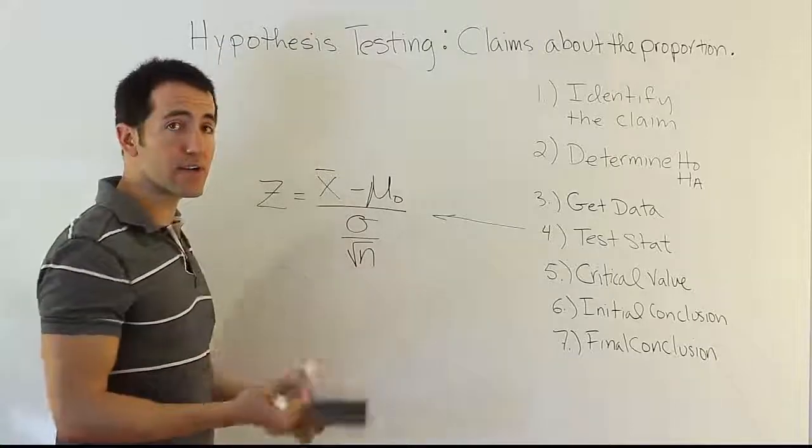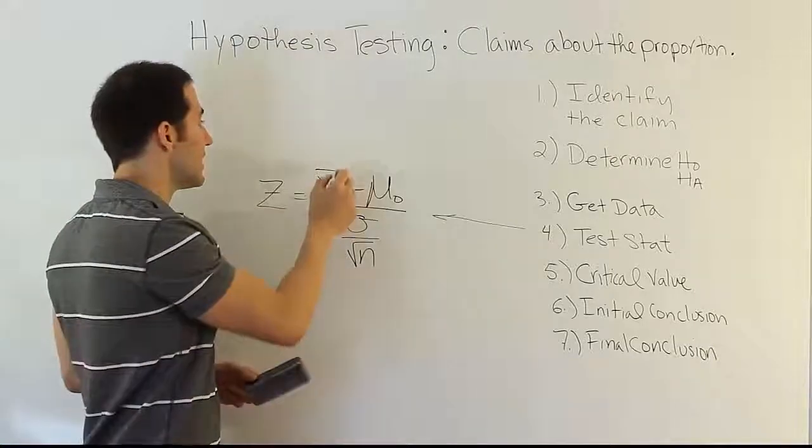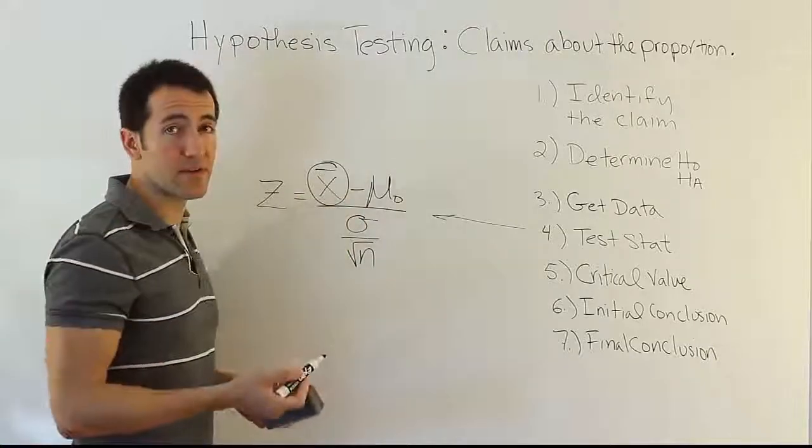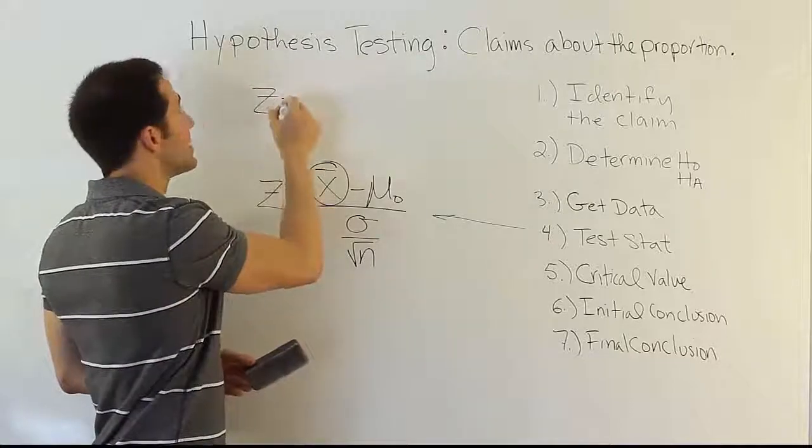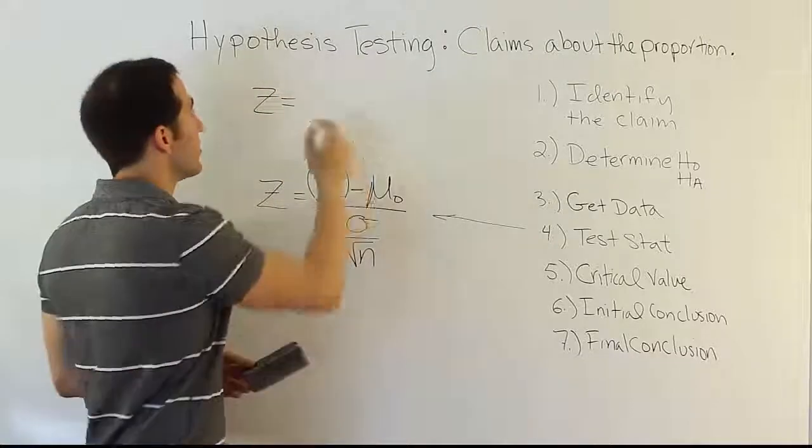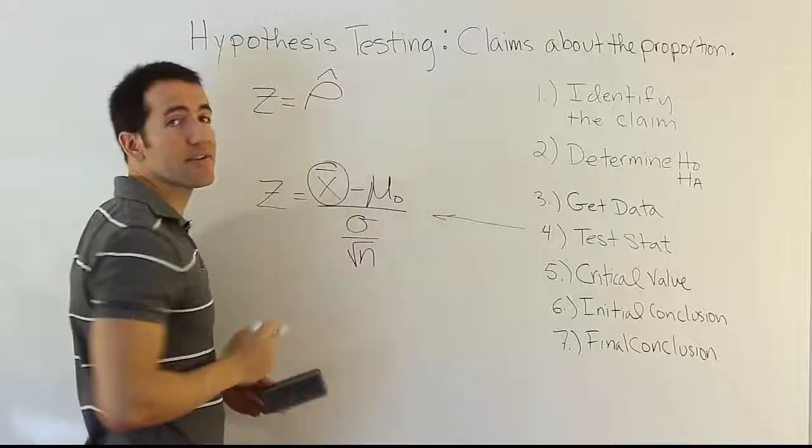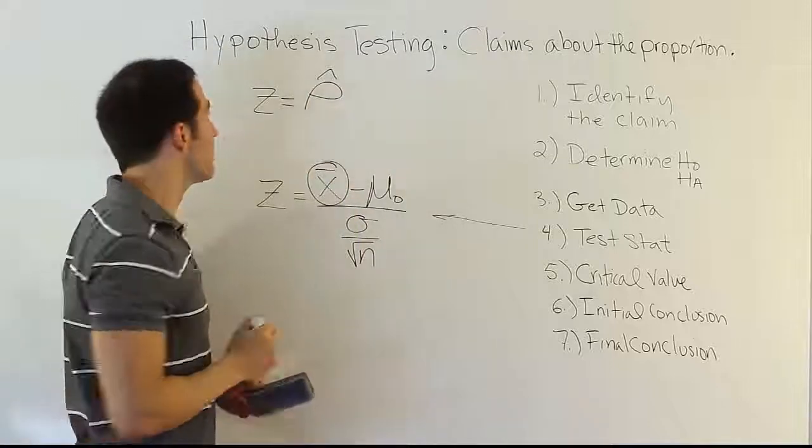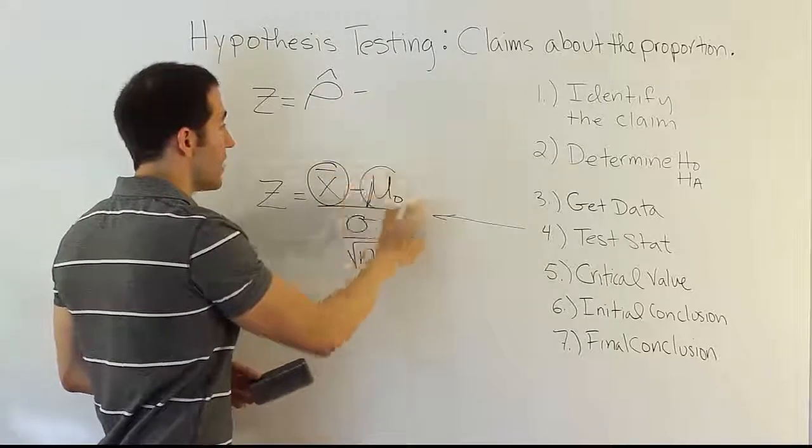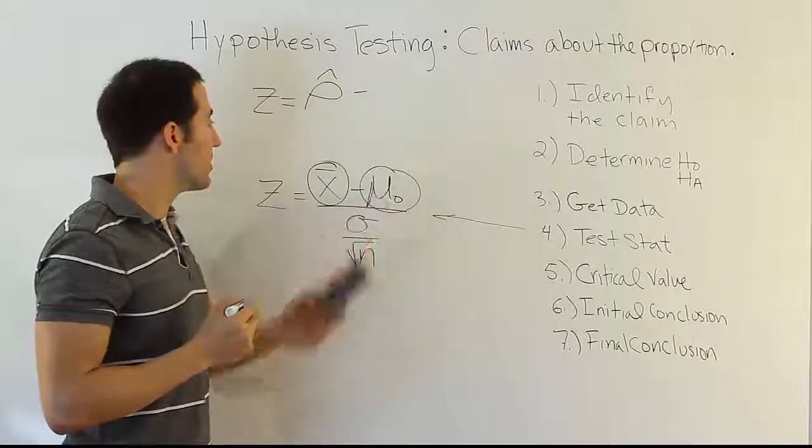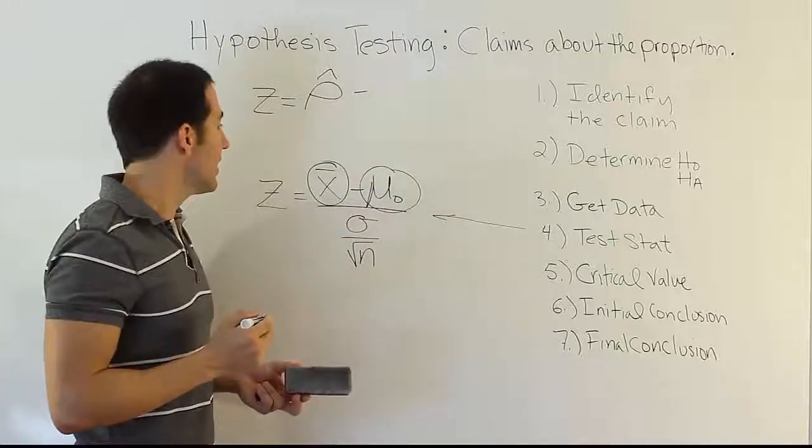If you look at the structure, the overall structure of this, you're going to see that x-bar was your point estimator. So for us, what will that be? Well, if we're testing a claim about a proportion, our point estimator becomes p-hat, the sample proportion. And then this guy, mu sub zero, that would have come from the null hypothesis. And so in our old test stat, we were testing a claim about the means, and the symbol was mu sub zero.